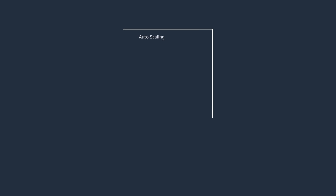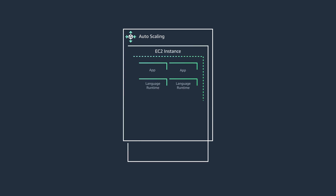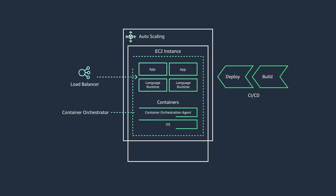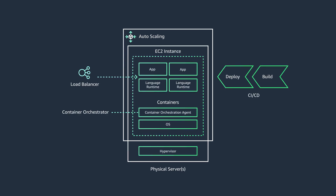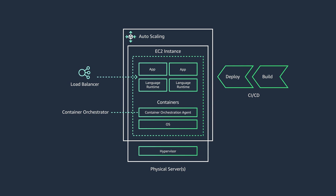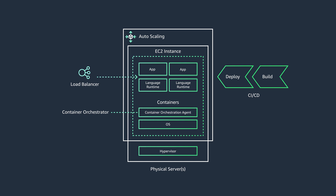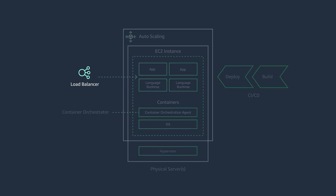The typical containerized web application architecture commences with a virtual machine and a guest operating system. The runtime language of choice is installed, and then the application is executed on the runtime platform. The stack is likely to have multiple instances in order to achieve scalability and redundancy, so it is necessary to preface it with a load balancer to distribute requests.